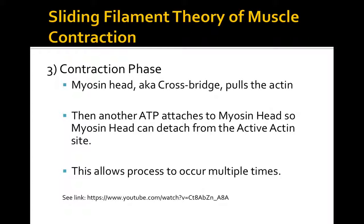Next, in the excitation-contraction coupling phase, nerve impulses send an action potential to the muscle, stimulating the sarcoplasmic reticulum to release calcium. Calcium binds to troponin, causing tropomyosin to uncover the active sites on the actin, allowing myosin to bind—ATP must be present for this. In the contraction phase, the myosin cross bridges pull the actin together in what's called the power stroke. ATP must return so the heads can detach from the actin and repeat.